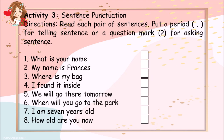Activity 3 is about sentence punctuation. Read each pair of sentences. Put a period for a telling sentence or a question mark for an asking sentence. 1. What is your name? 2. My name is Frances. 3. Where is my bag? 4. I found it inside. 5. We will go there tomorrow. 6. When will you go to the park? 7. I am 7 years old. 8. How old are you now?